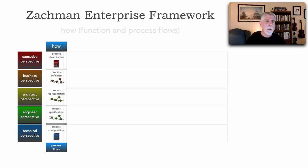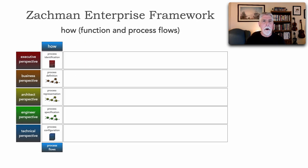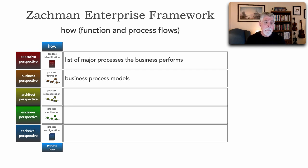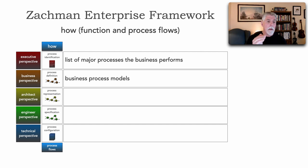The 'how' model describes various processes — both technical and non-technical. The executive perspective covers the highest-level, most general major business processes the business performs — a list of lines of business and their critical processes. The business perspective shows workflow models and business process models: how do you place an order, how do we process a claim? The fact that we process claims is an executive-level perspective; how we do it belongs at the business perspective.